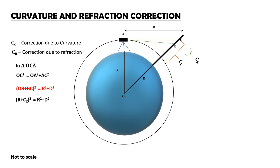So, R plus CC the whole square is equal to R square plus D square. Do not neglect CC as that is what we need to derive over here. Just expand the above equation. R square plus CC square plus 2R·CC is equal to R square plus D square.